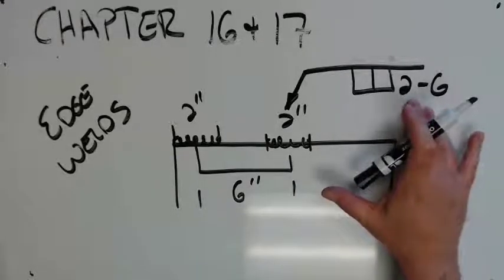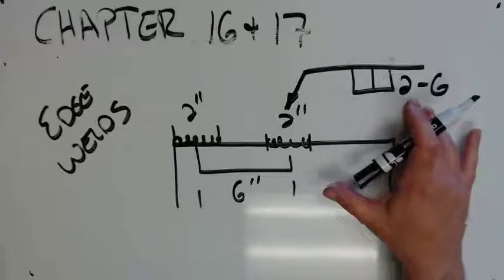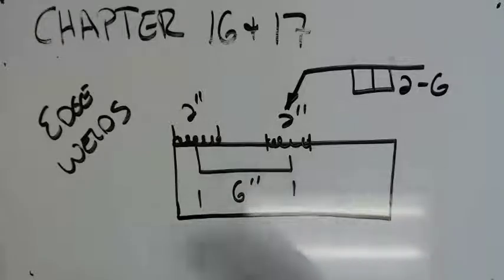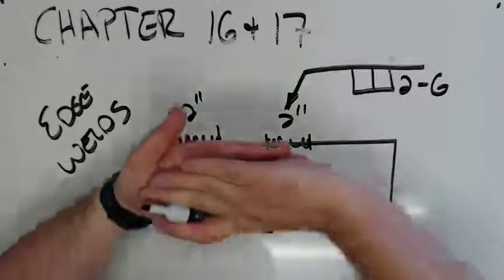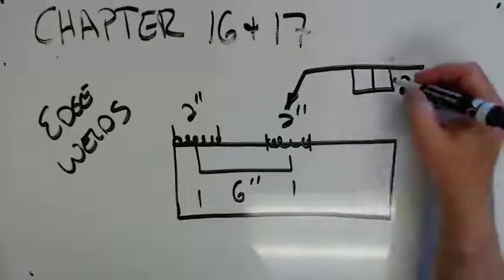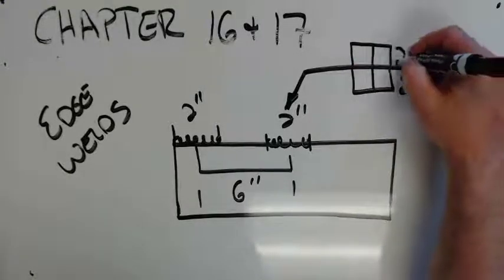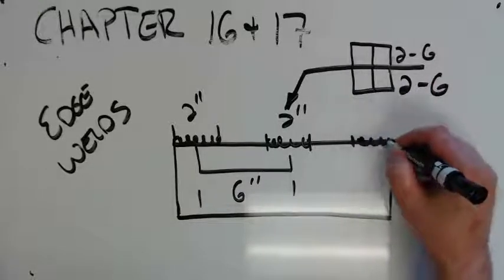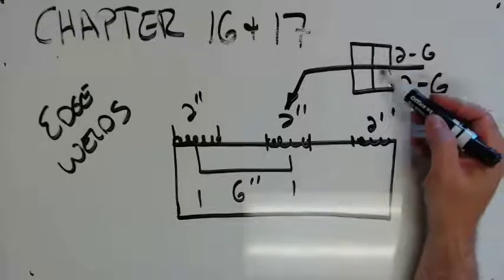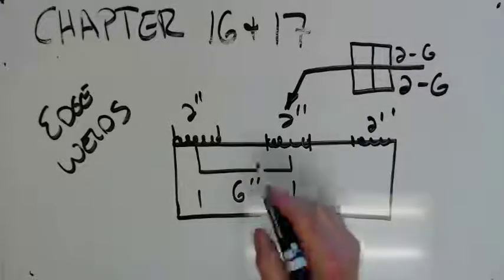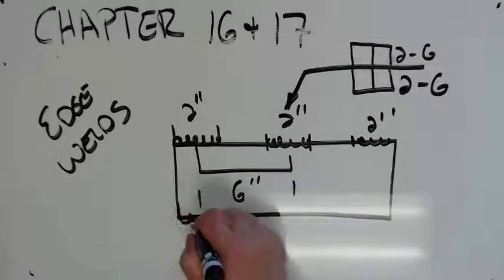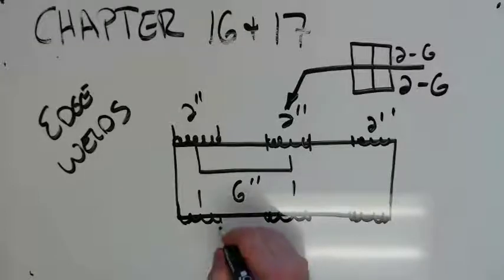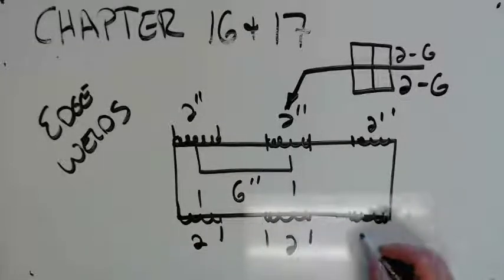This is an intermittent weld pattern. There is what they call chain and staggered. Let's say this is two pieces sandwiched on top of each other, so I'm going to do an arrow side and other side. If I stack them like this, where the symbols are right on top of each other, this is called a chain. What that means is whatever this layout pattern is, this is going to be the same thing: two inches, two inches, two inches.